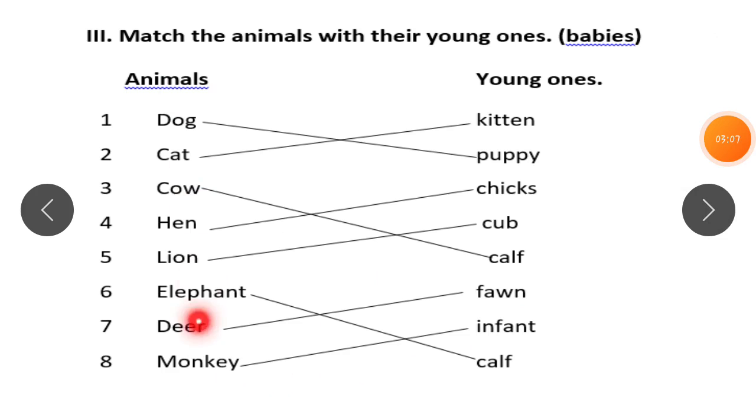Next, animals and their young ones. Dog young one is called puppy. Cat young one, kitten. Cow, calf. Hen, chicks. Lion, cub. Elephant, calf. Deer, fawn. Monkey, infants.